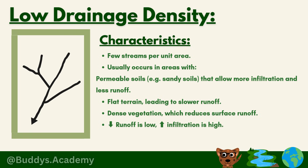The next point states it occurs on flat terrain, which leads to slower runoff. On flat terrain, water moves slowly and has more time to soak in instead of running off the surface quickly. Dense vegetation also reduces surface runoff — plants grow close together, covering most of the ground, slowing the water and helping it soak into the soil. If runoff is low, infiltration is high, meaning less water flowing on the surface means more water is being soaked into the ground.